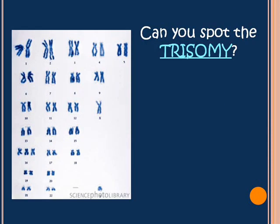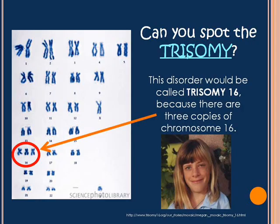Take about 10 seconds and see if you can spot the trisomy in this karyotype. We would call this one trisomy 16 because there are three copies of chromosome 16. The picture of this girl here is Megan — she's had trisomy 16 since before she was born and she's actually pretty healthy.